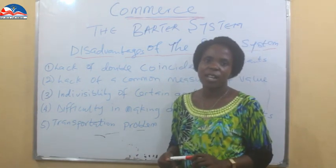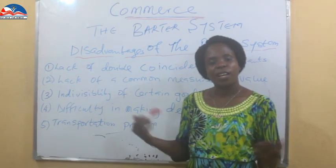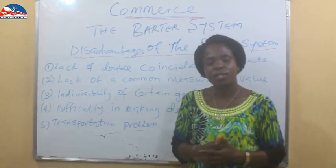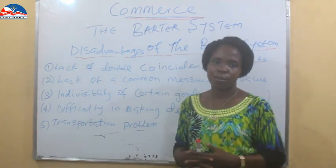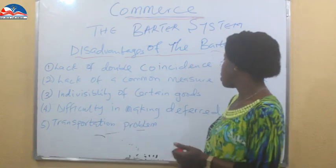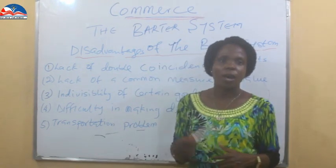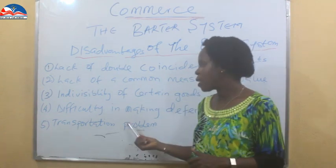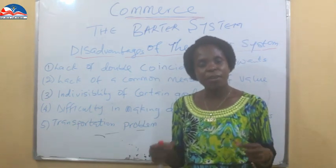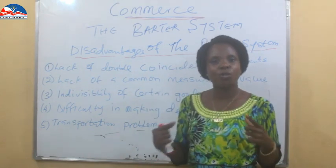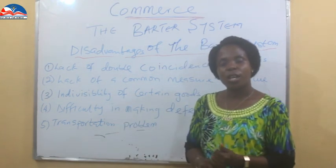Some goods simply cannot be divided — if I have a canoe to exchange, it is not divisible, and you may only need a small quantity of garri. Some products are not divisible, and that becomes a problem. Difficulty in making deferred payments: I want to pay at a later date, I want to pay in the future. But in the barter system, exchange is immediate — take my rice and give me garri, because that satisfies my wants and my immediate family's wants. If you don't have it right now to exchange, you won't get anything.